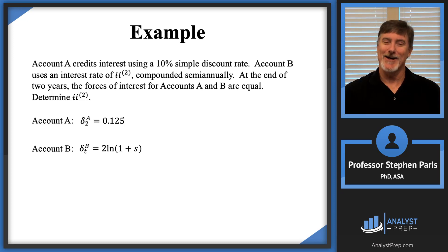Let me change the T to a 2. And I get 2 times the natural log of 1 plus S. There was no Ts in the expression that defined it. It was constant with respect to T. And so now I've got the forces of interest at time 2 for both accounts, and they're supposed to be equal. So I set those equal to each other.